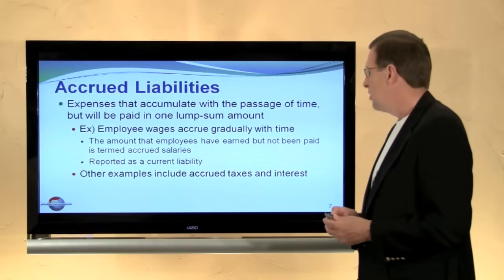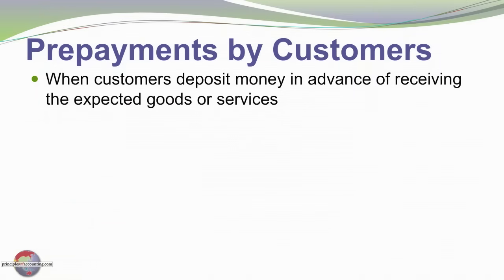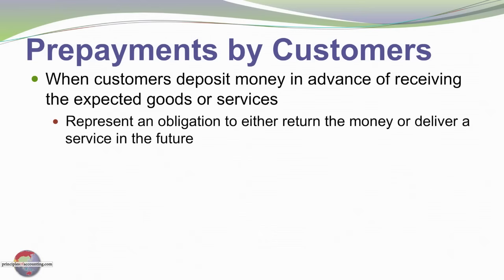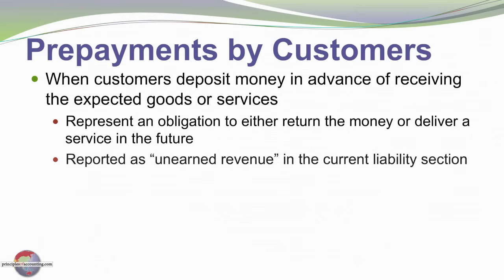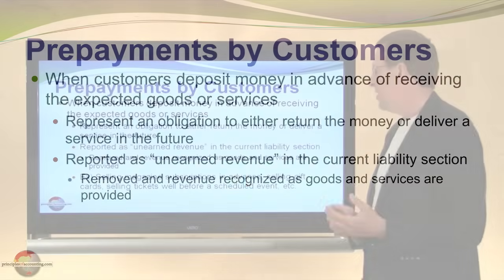Taxes and interest are other items that are often shown as an accruing liability amount. Pre-payments by customers is another current liability. When customers deposit money in advance of receiving the expected goods or services, those deposited monies would be shown as a current liability because they represent an obligation to either return the money or provide the service. These amounts are often called unearned revenue, and they're removed and recognized in revenue as the goods and services are provided.